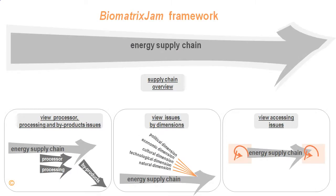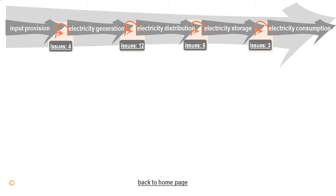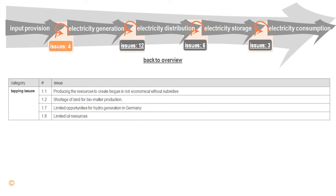Let us now have a look at the issues associated with accessing or tapping — for example, storage, transport, interaction between linking stakeholders, or other accessing considerations. By clicking on the tapping arrow between input provision and electricity generation, we can see the list of issues on the interface of these two supply chain links.